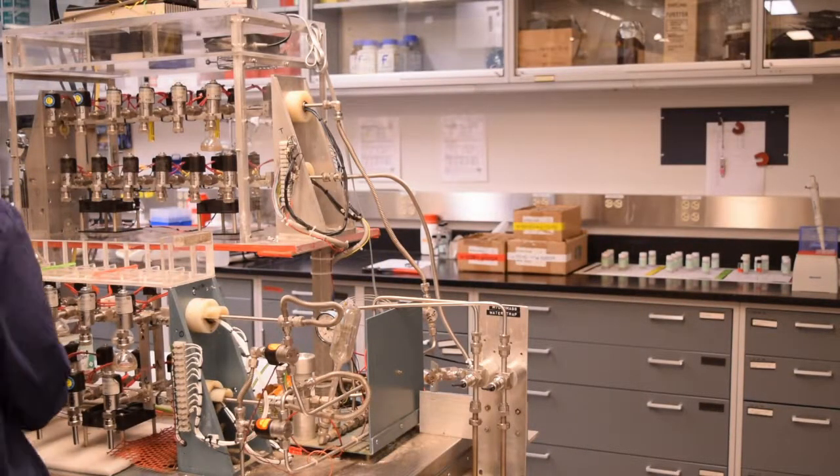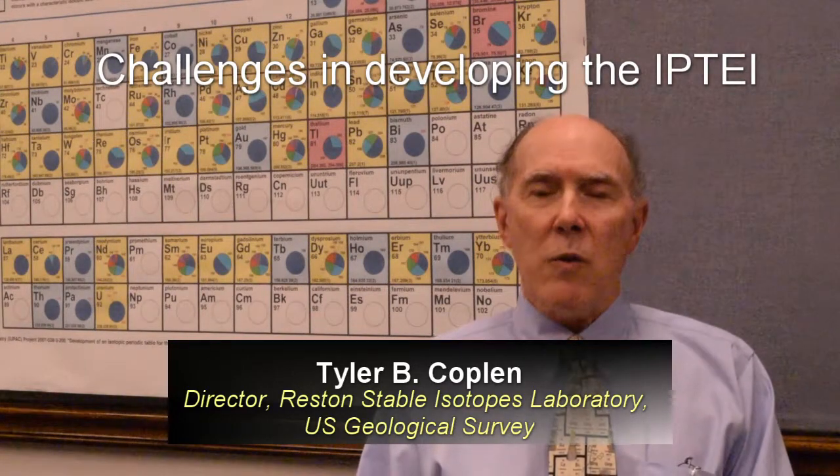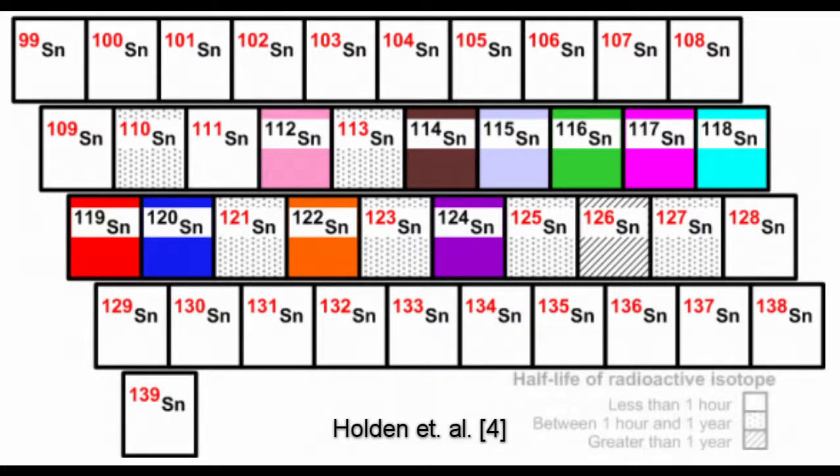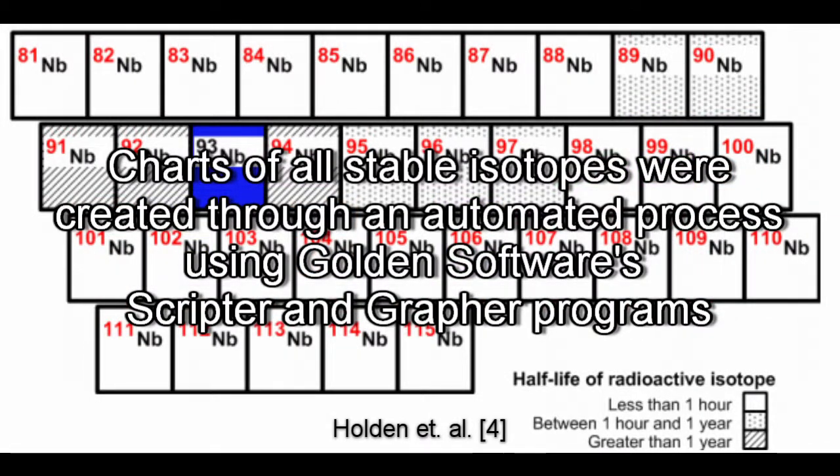One of the challenges in the IPTEI that we needed to overcome was showing how to make a chart of 40 to 50 radioactive and stable isotopes for each of the 118 chemical elements. Imagine having to do that manually. It would give you a very bad headache.